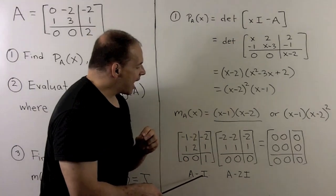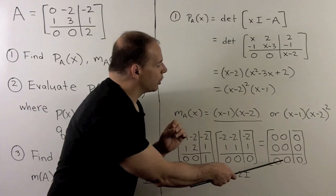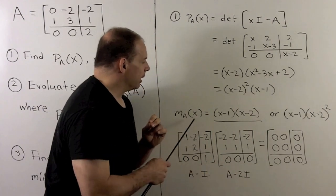If I check A minus I times A minus 2I, just work that out, out comes the zero matrix, so this has to be our minimal polynomial.